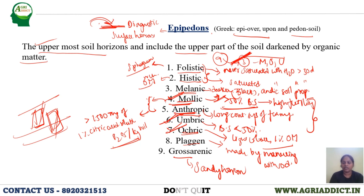Of the nine epipedons, three are very important and prevalent in India: mollic, umbric, and ocric. We have to learn all nine epipedons, but these three are particularly important. Always learn them comparatively — folistic vs. histic, mollic vs. anthropic, mollic vs. umbric — and by understanding the generic name, we can tell the features of each epipedon.